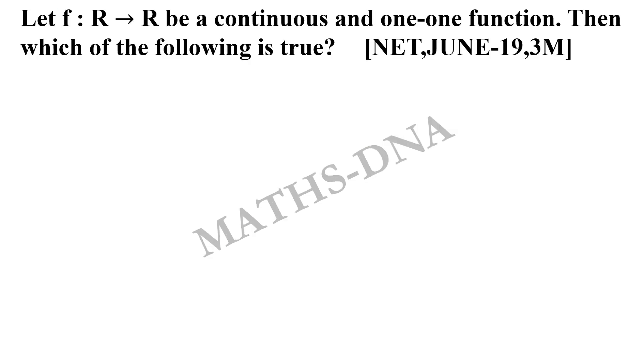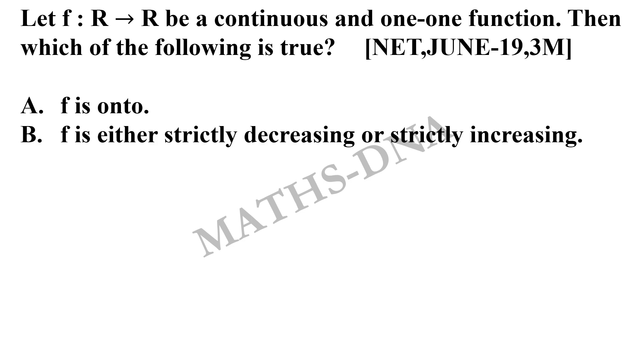Now moving on to our question. The question is: let f from R to R be a continuous and one-one function. Then which of the following is true? The options are A: f is onto, option B: f is either strictly decreasing or strictly increasing, option C: there exists x belongs to R such that f(x) equals 1, and option D: f is unbounded.